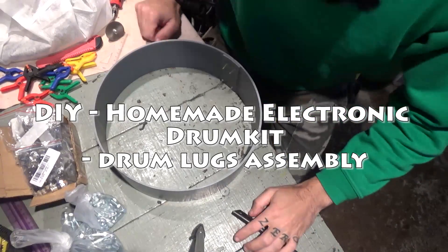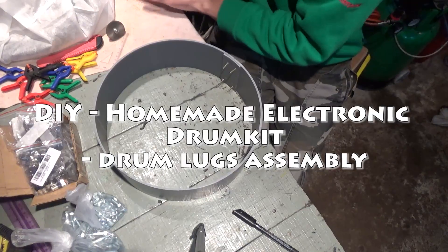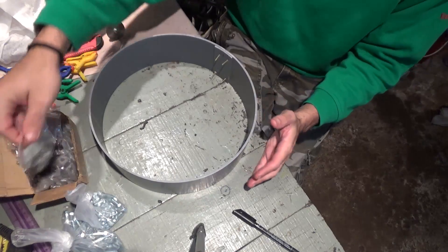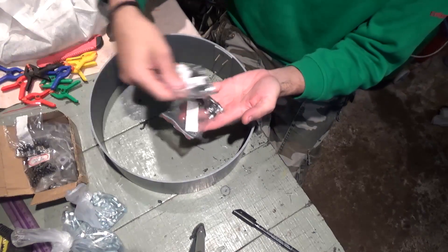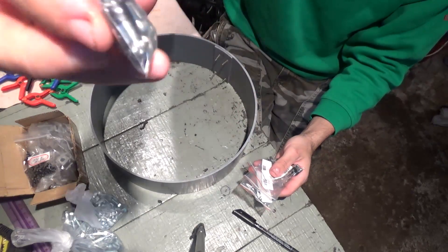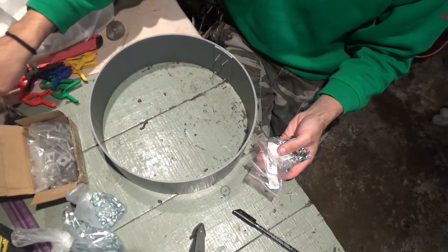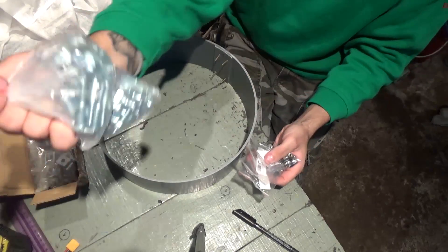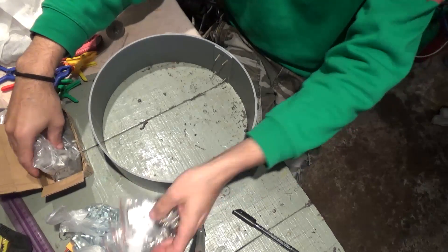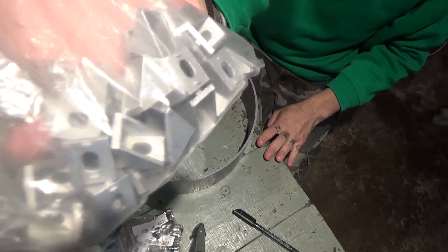Hey everybody, welcome to another video on the electronic drum set build. I've already received parts. I have here the jack connectors that I'm going to be using, these are small ones, 3.5 I think. I got bolts and nuts I bought yesterday, and I got these things I'm going to be using as drum lugs.